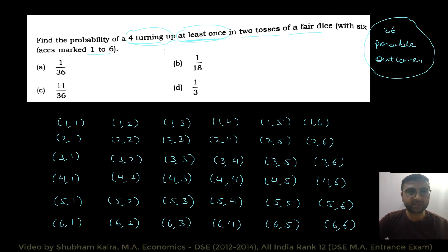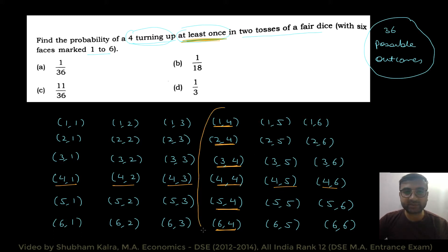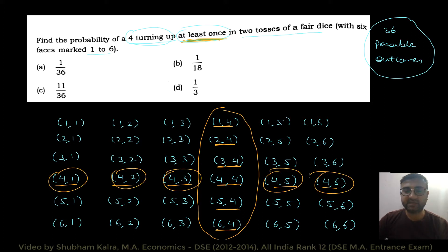Hume woh sare outcomes chahiye jaha peh 4 aaye at least once. Including (4,4) bhi hem favorable number of outcomes mein include karenghe, kyunki hume chahiye at least once. In sab outcomes ko include karte hain. Aur in outcomes ke ilawa, koi aur outcome nahin hai jo favorable outcomes mein count hoga. Ye in total 11 hain — joh favorable number of outcomes hain, woh hain 11.